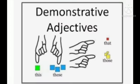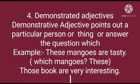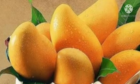Demonstrative adjectives point out persons or things meant. This, that, these, those, such, etc. are demonstrative adjectives. They answer the question 'which.' For example: These mangoes are tasty. Those books are very interesting. Which mangoes? Answer: these. Which books? Answer: those. So these and those are demonstrative adjectives here.